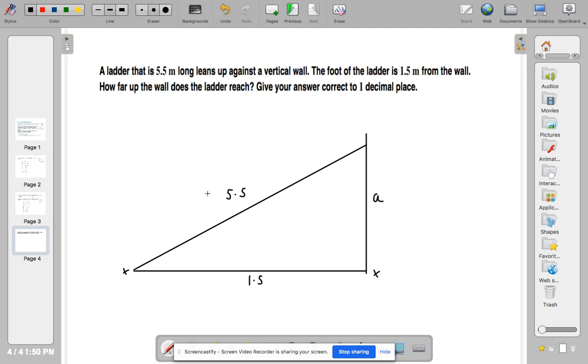So as with our formulas we saw before, C equals 5.5, B will equal 1.5. So using our formula, A squared equals C squared minus B squared. A squared equals 5.5 squared minus 1.5 squared.